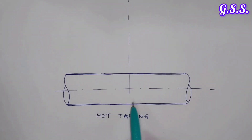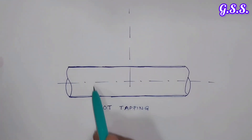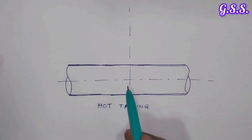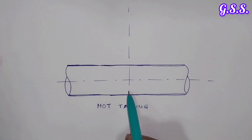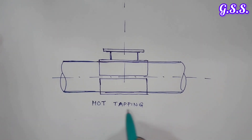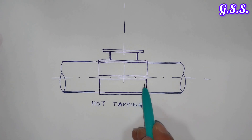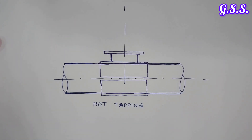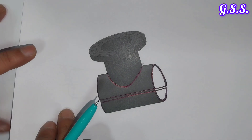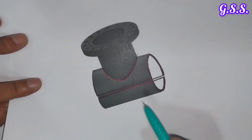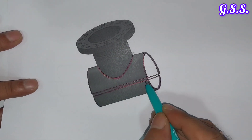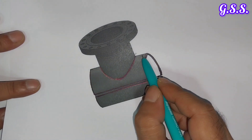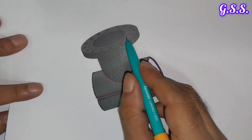To perform hot tapping on this pipeline, meaning a branch connection on this charged pipeline, two to three steps are there. The first step of hot tapping is to provide a split T. It has two parts: a lower part and an upper part with branch connection and flange.